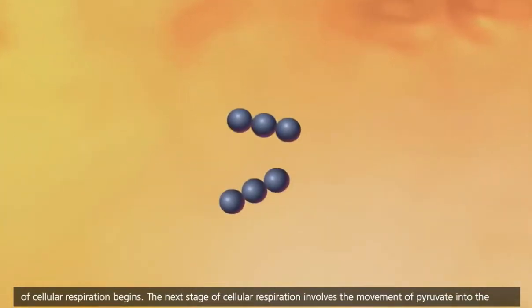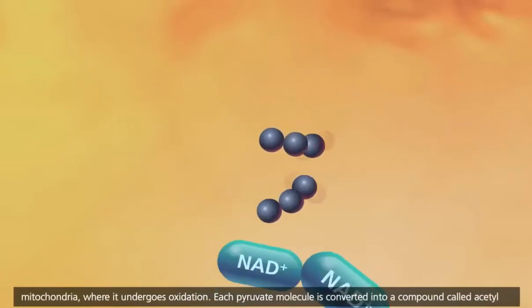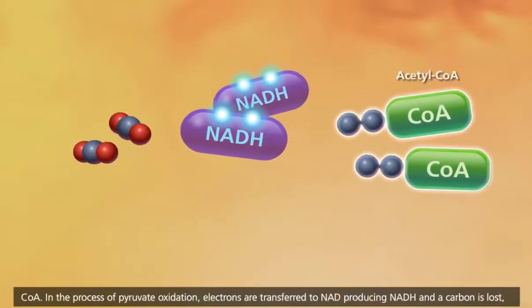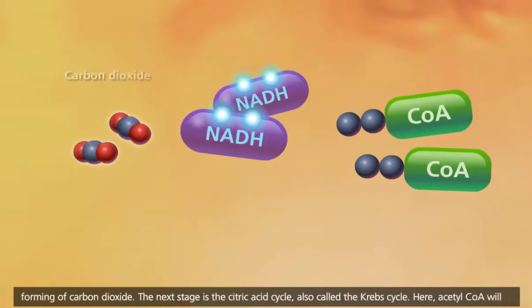The next stage of cellular respiration involves the movement of pyruvate into the mitochondria, where it undergoes oxidation. Each pyruvate molecule is converted into a compound called acetyl-CoA. In the process of pyruvate oxidation, electrons are transferred to NAD+, producing NADH, and a carbon is lost, forming carbon dioxide.